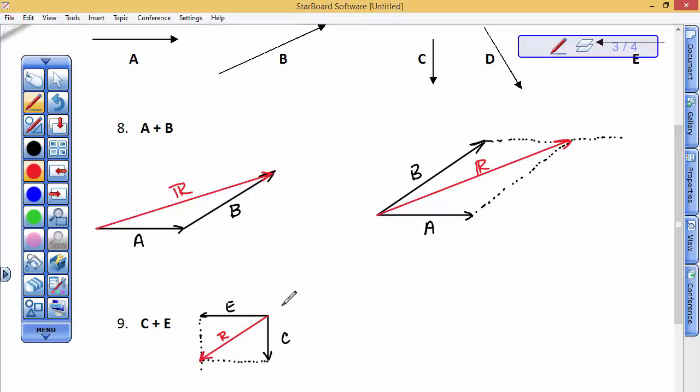Please notice that by the other method before, we drew C down and then we drew the tail of E to the head of C. That's supposed to be along that dotted line. And then we connected from the tail of the first to the head of the last. So I hope you just see this parallelogram method.